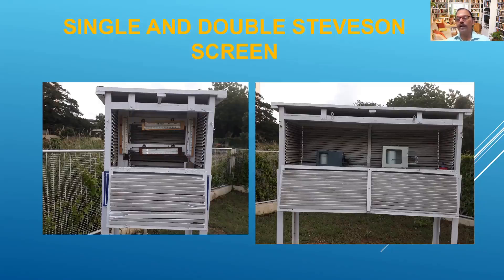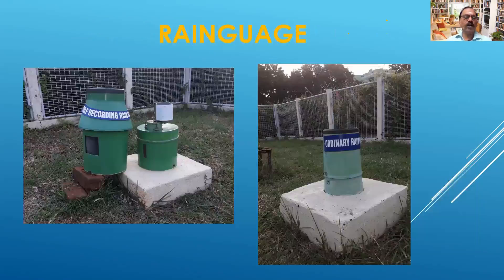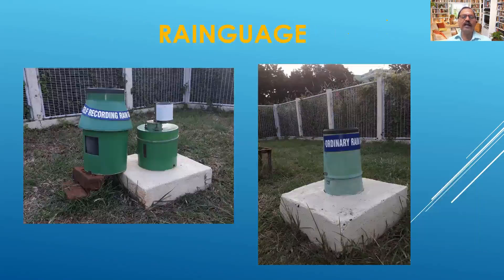In the double Stevenson screen there are two instruments: a thermograph and a hygrograph. The thermograph gives a 24-hour record of temperature. There are also self-recording rain gauges and wind instruments — on the left is the pressure tube wind anemometer and on the right is the wind vane. This is the present setup of the surface observatory. There is more information which will be covered in the next video. Thank you, goodbye.